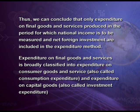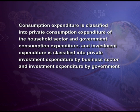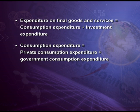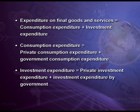Expenditure on final goods and services is broadly classified into expenditure on consumer goods and services — called consumption expenditure — and expenditure on capital goods — called investment expenditure. Consumption expenditure is further classified into private consumption expenditure of the household sector and government consumption expenditure. Similarly, investment expenditure is classified into private investment expenditure by the business sector and investment expenditure by the government. This was the third method of measuring national income.